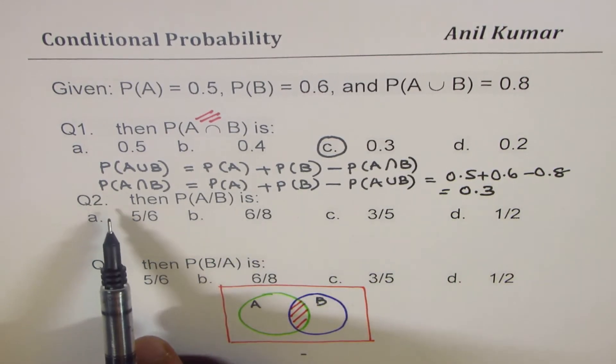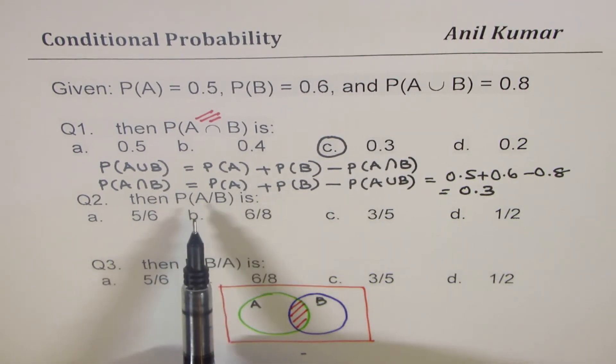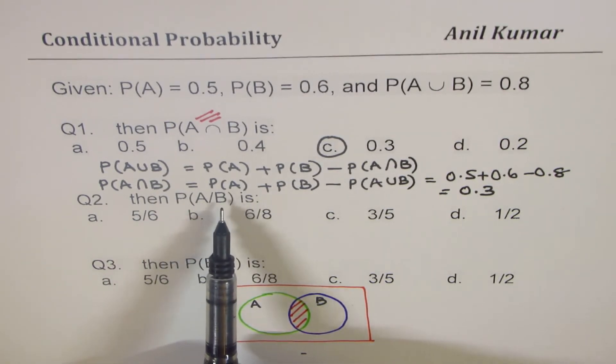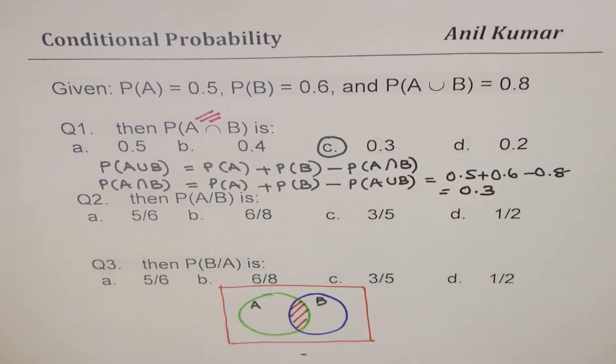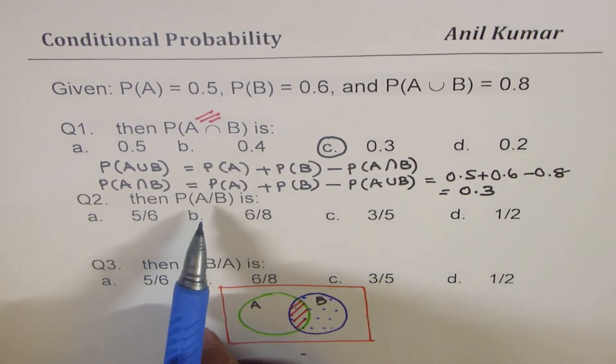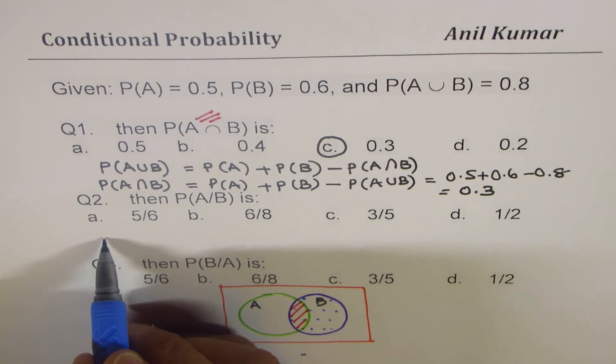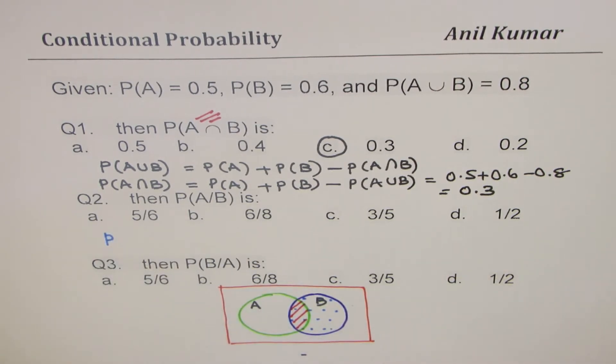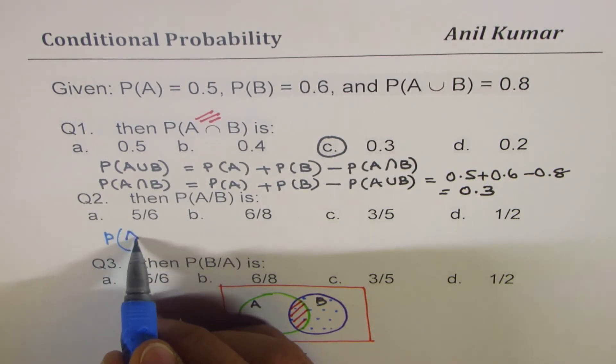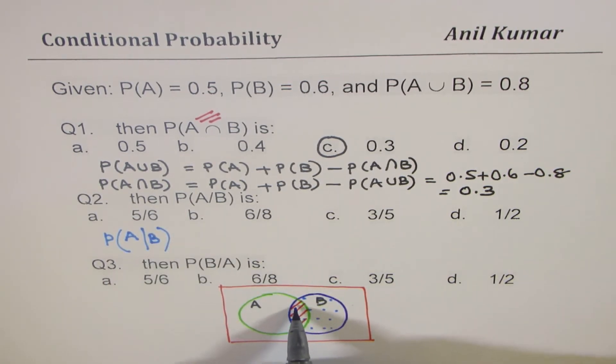Now the second question is what is the probability of A when B has occurred. So that means now we are looking for a situation where B has already happened. So B has occurred, so that is what is our case. Now probability for A to happen when B has already happened, so that means we are again into this intersection.